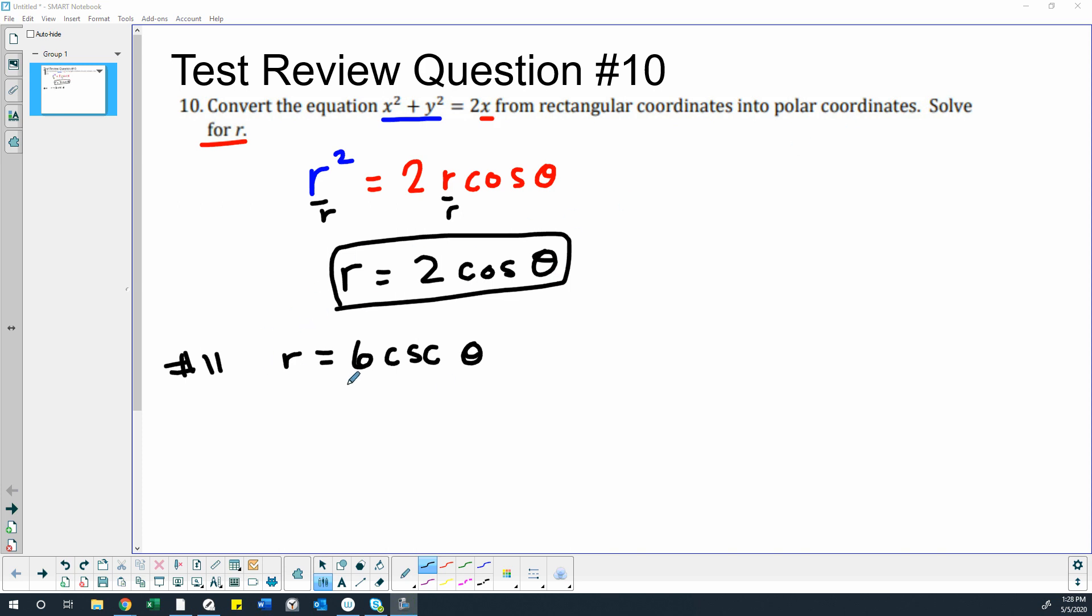This one is starting in that form with r equals something, but it's not convenient to replace x squared and y squared with r squared because there is no r squared. It's not convenient to replace the trig part with x or y because there's no r in here.